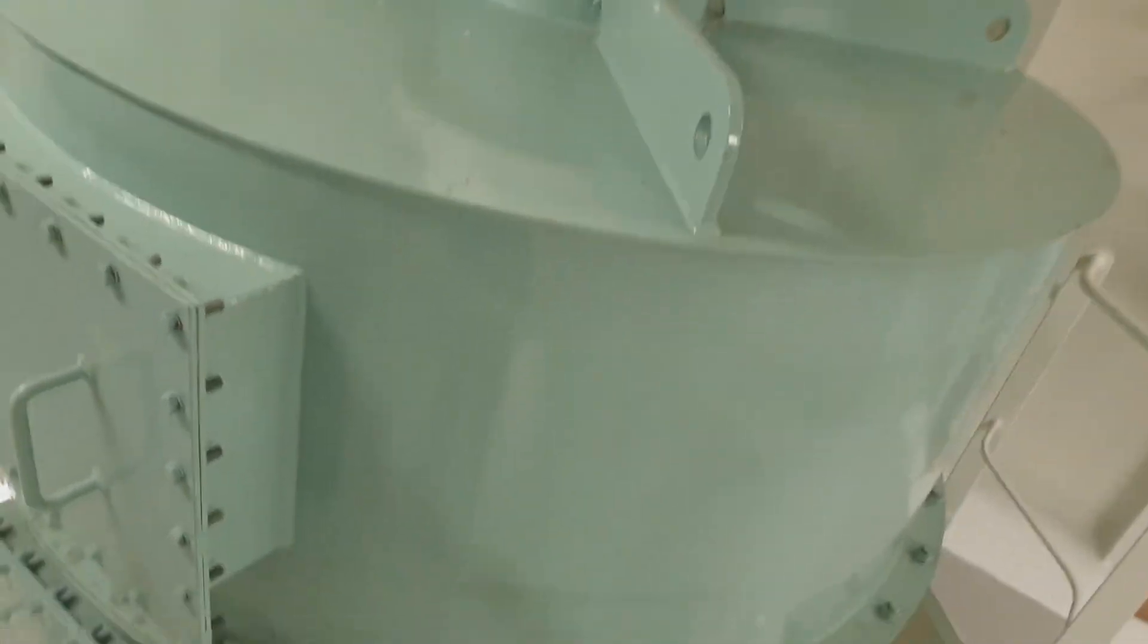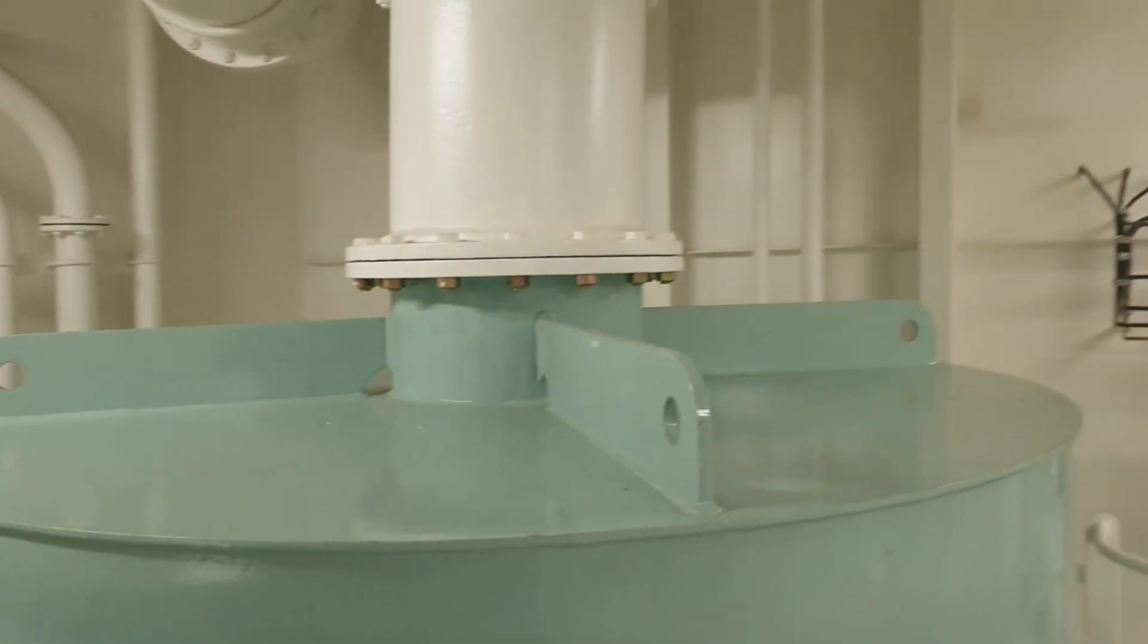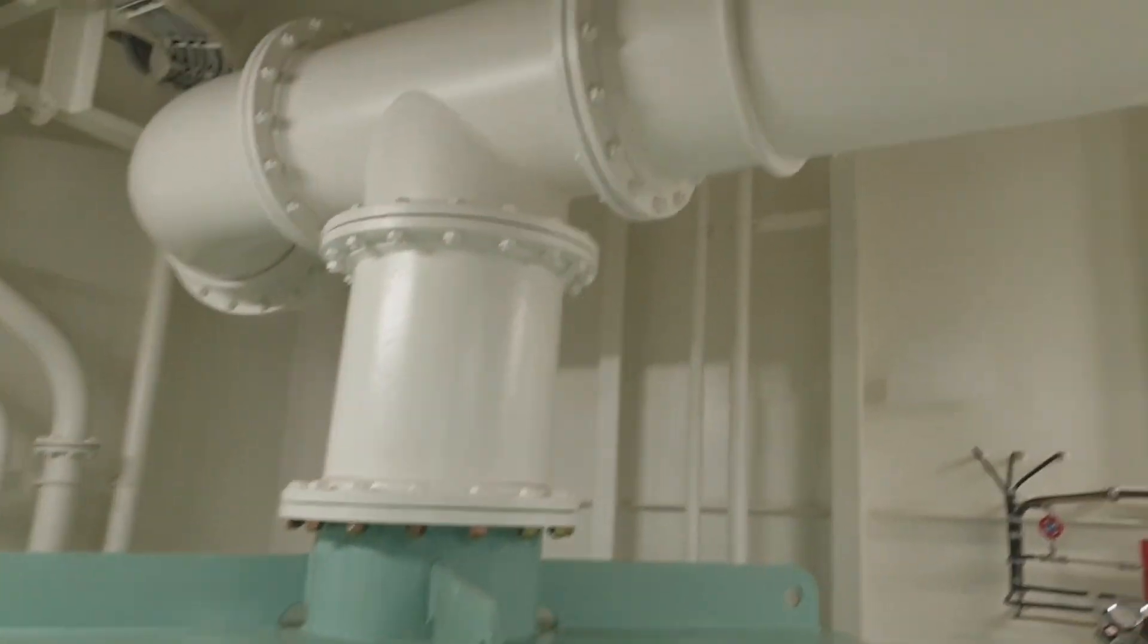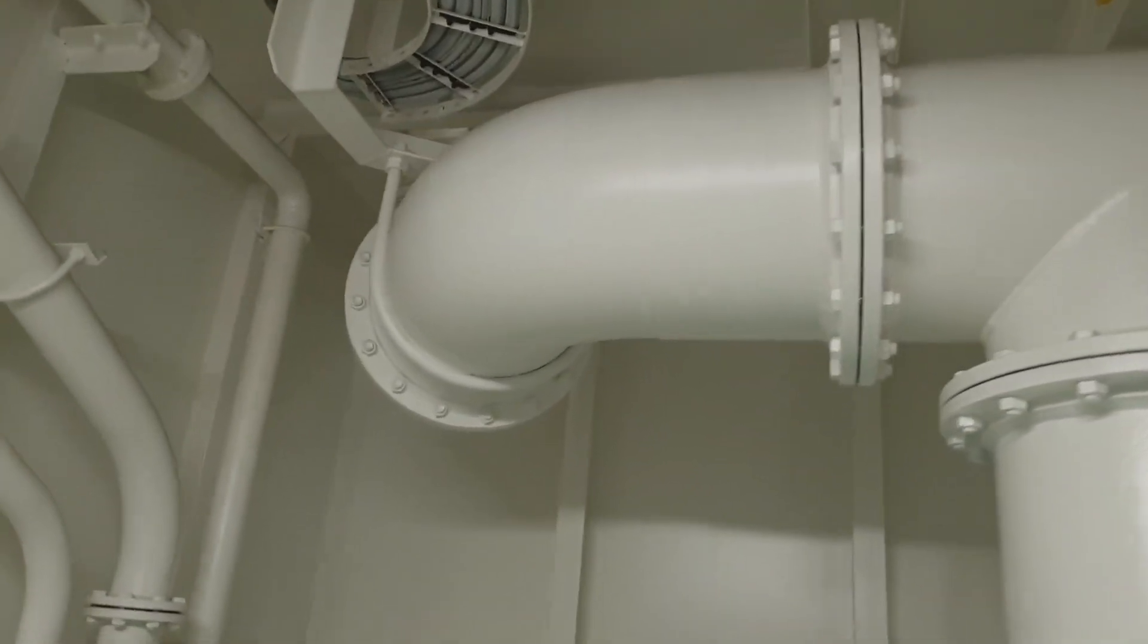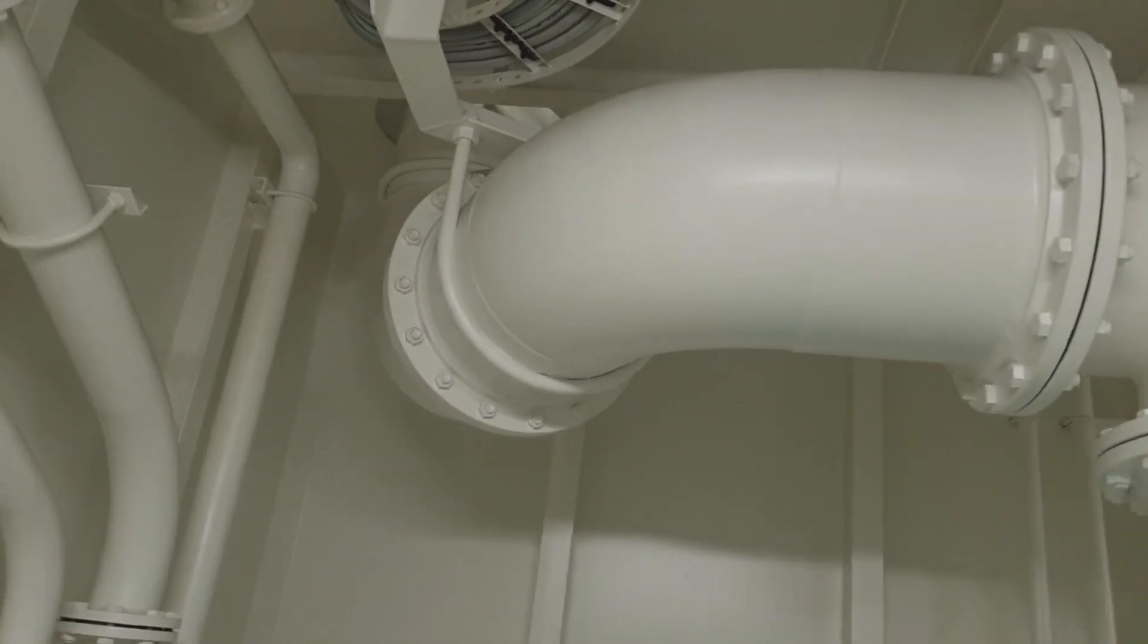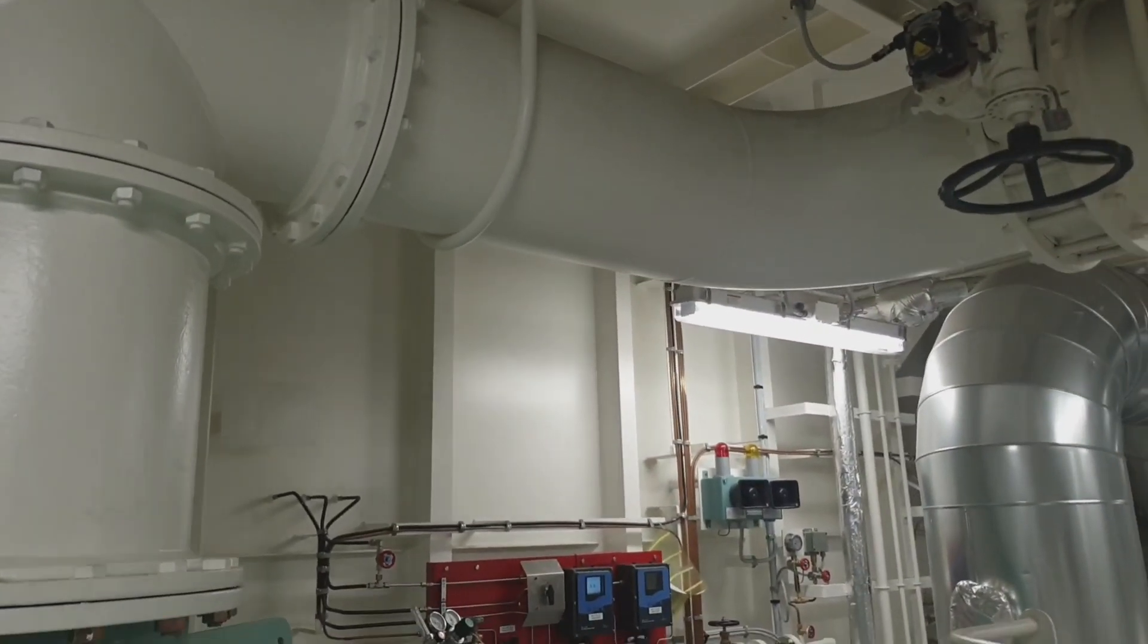The scrubber tower has the capacity same as the inert gas blower, which is 11,350 cubic meters per hour.